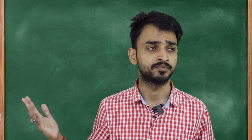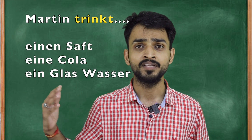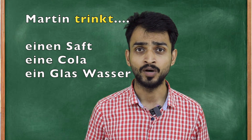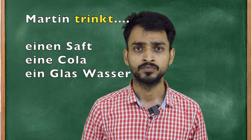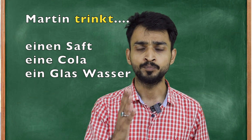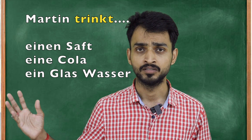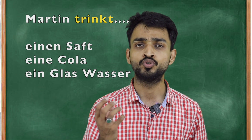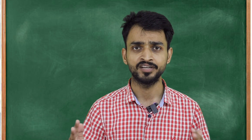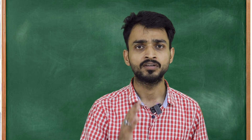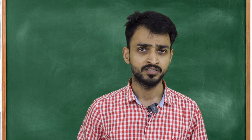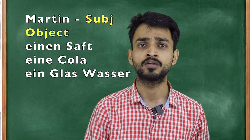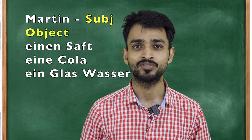Let's take an example of a third person — like Martin. Martin trinkt einen Saft. We can also say er trinkt einen Saft. What is he drinking? A juice — einen Saft. Einen Saft is the accusative object. The subject is Martin, because Martin is drinking. He is performing the action. He is the doer. This is accusative.